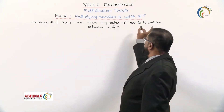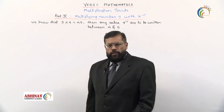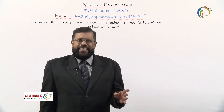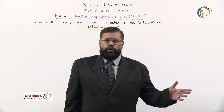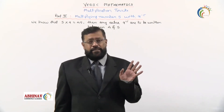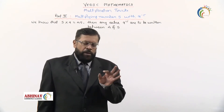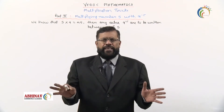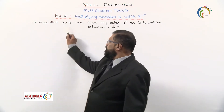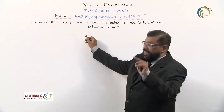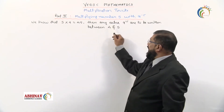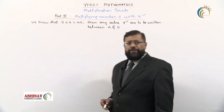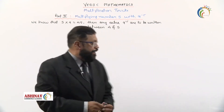We are multiplying number five with nines — whether it is 9, 99, 999, or whatever. We know that 5 × 9 = 45. Any extra nines are to be written between the 4 and the 5.